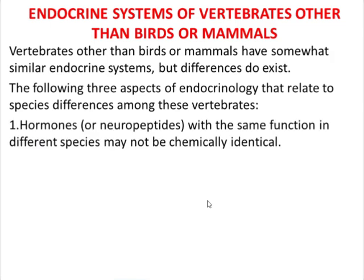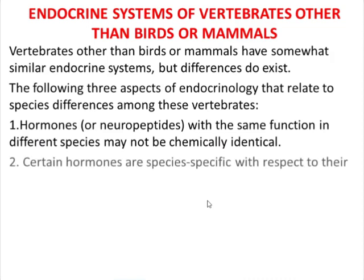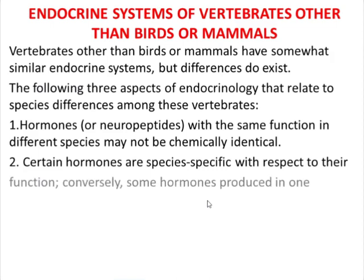Number 1: Hormones or neuropeptides with the same function in different species may not be chemically identical — meaning hormones having the same function in different species may be chemically different from each other. Number 2: Certain hormones are species-specific with respect to their function. A hormone having one function in a species may have a different function in another species.